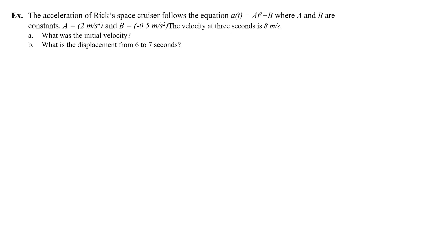Let's do another example. The acceleration of Rick's space cruiser follows the equation a(t) equals at-squared plus b, where a equals 2 meters per second to the fourth and b equals negative 0.5 meters per second squared. The velocity at 3 seconds is 8 meters per second. I'll write this acceleration in math-friendly form: a equals 2t-squared minus one-half.